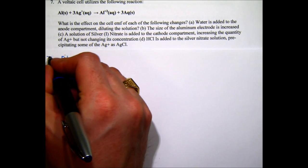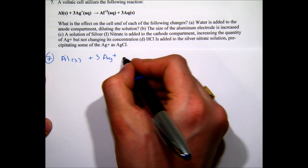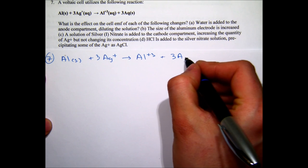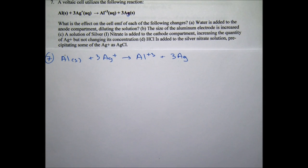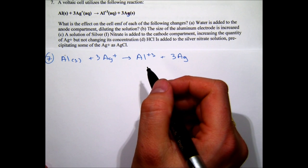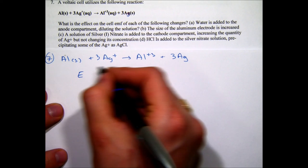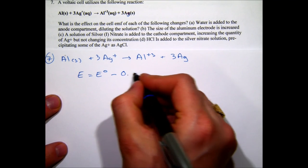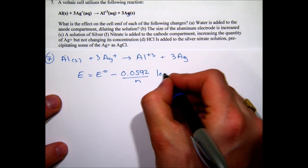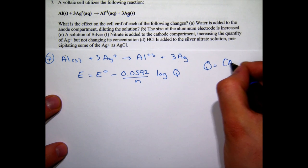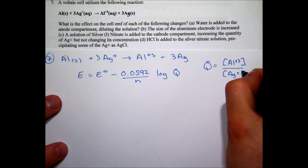Question seven uses the reaction: Al(s) + 3Ag⁺(aq) → Al³⁺(aq) + 3Ag(s). We apply the Nernst equation: E = E° − (0.0592/n)·log Q, where Q = [Al³⁺]/[Ag⁺]³. Note that solids don't appear in Q. For part (a), if water is added to the anode compartment, it decreases [Al³⁺], which decreases Q. Since we're subtracting log Q and Q decreases, E increases.